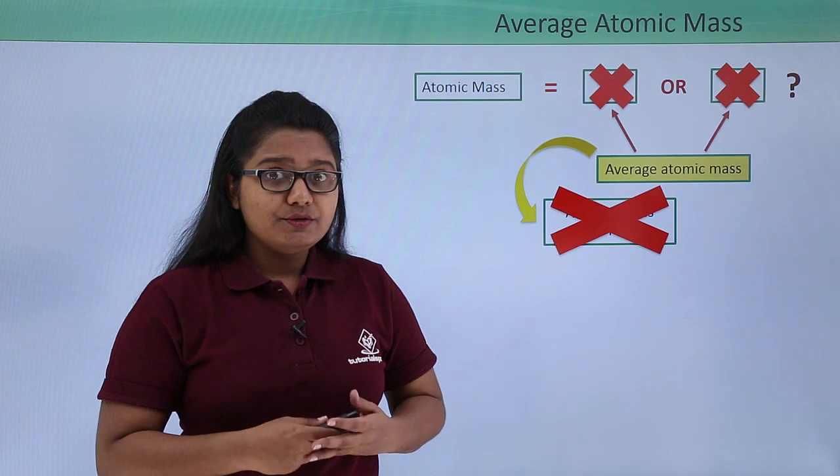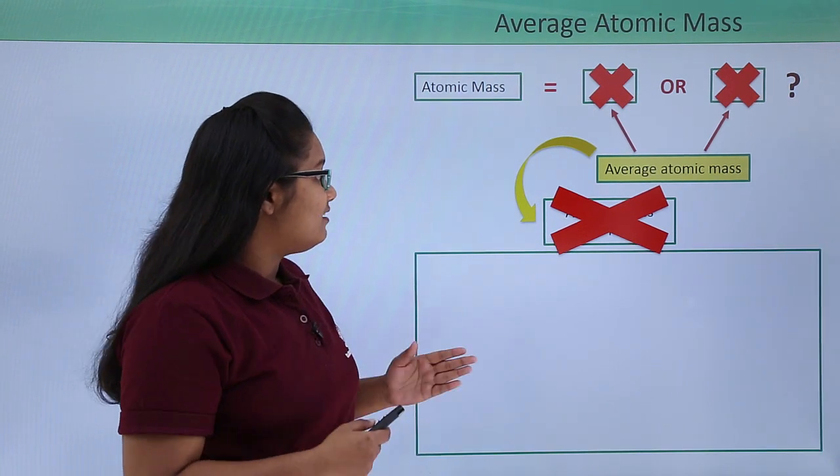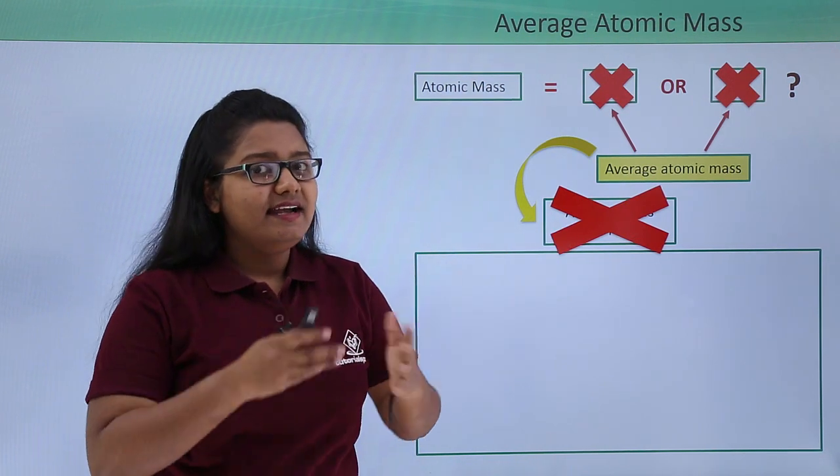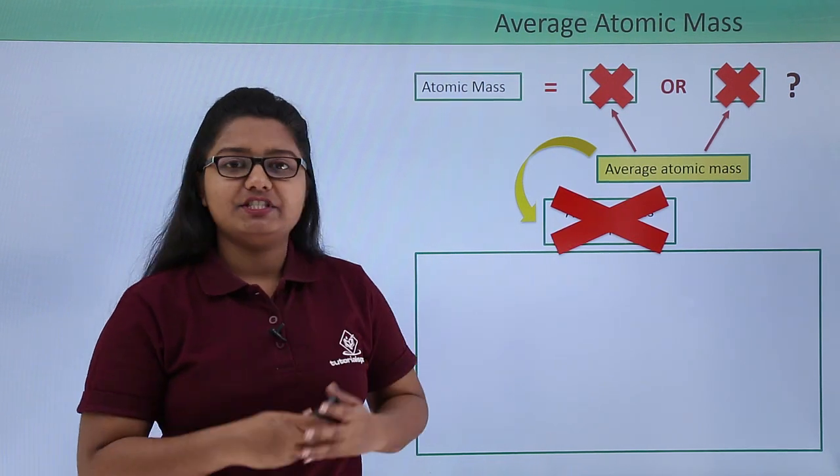So what should we do? We have to find the contributions of both the chlorine atoms and then add them up, which gives us the average atomic mass.